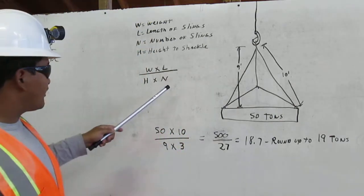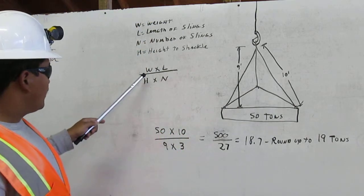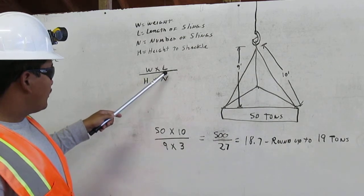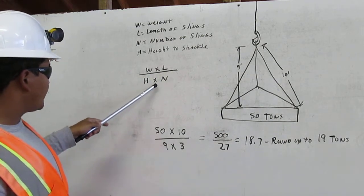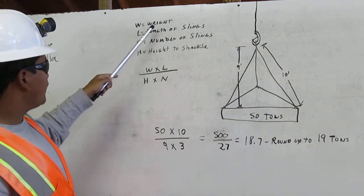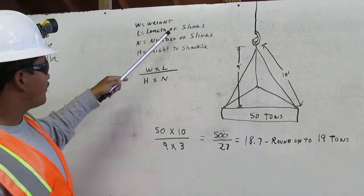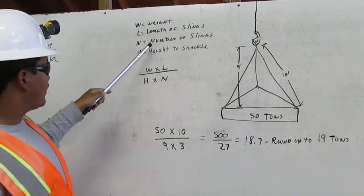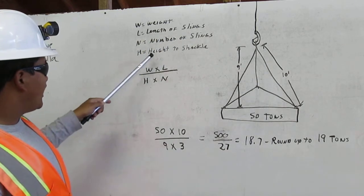Here is my sling stress formula: W times L over H times N. W equals weight, L equals length of slings, N equals number of slings, H equals height of shackle.